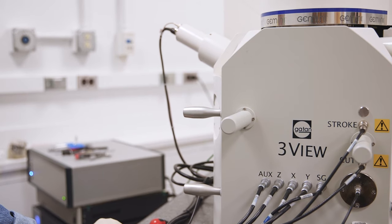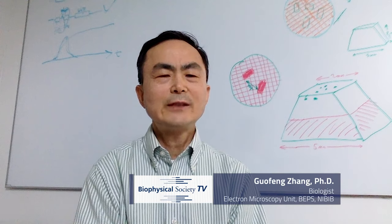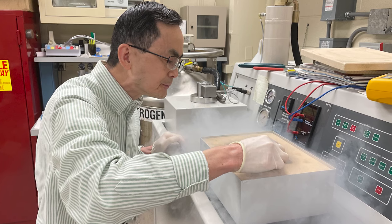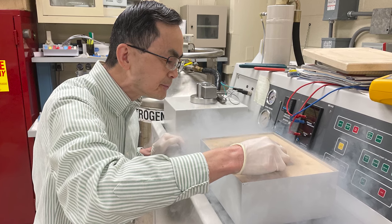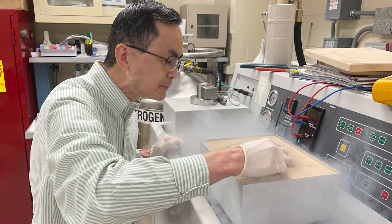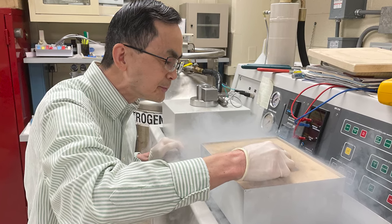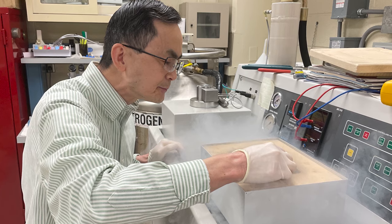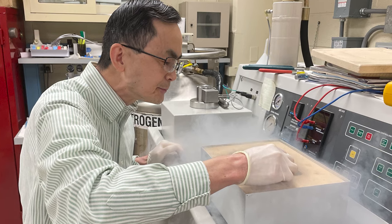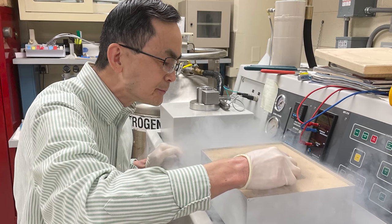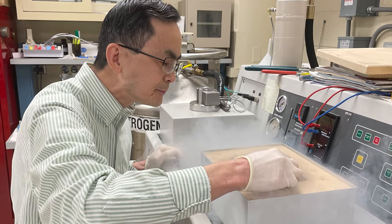The 3D electron microscope in our lab relies on using fixatives together with heavy metals to stain cells and tissues that are embedded in plastic. Sometimes we also use the high-pressure freezing method to preserve the ultra-structure for high-resolution studies.